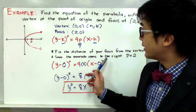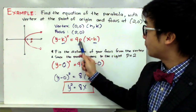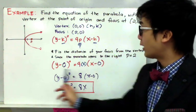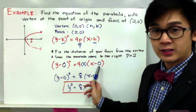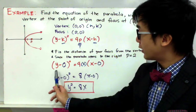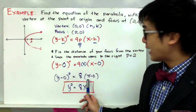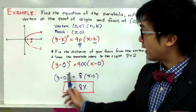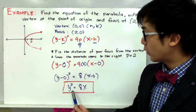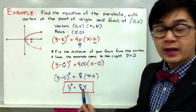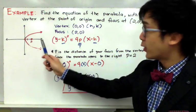By direct substitution: k = 0, h = 0, and p = 2. So we have (y − 0)² = 4 × 2 × (x − 0), which simplifies to (y − 0)² = 8(x − 0). Since we only have 0 by y and x, we can drop those terms, giving us y² = 8x. This is the equation of your parabola given its vertex at the origin.